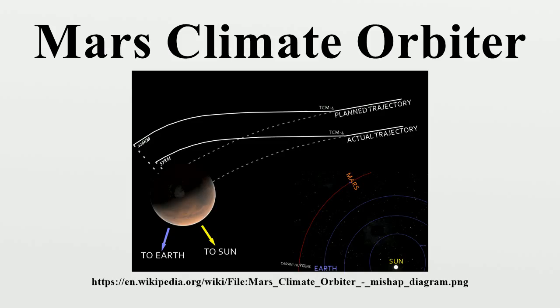Software that calculated the total impulse produced by thruster firings calculated results in pound-seconds. The trajectory calculation used these results to correct the predicted position of the spacecraft for the effects of thruster firings. This software expected its inputs to be in Newton-seconds. The discrepancy between calculated and measured position, resulting in the discrepancy between desired natural orbit insertion altitude, had been noticed earlier by at least two navigators, whose concerns were dismissed.